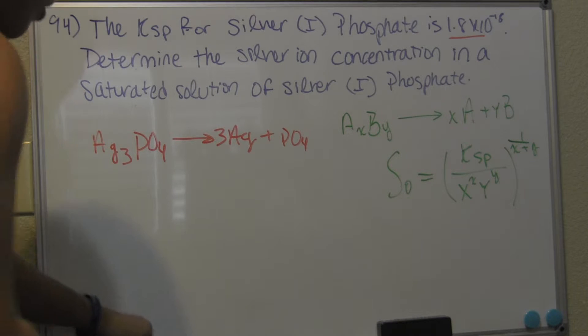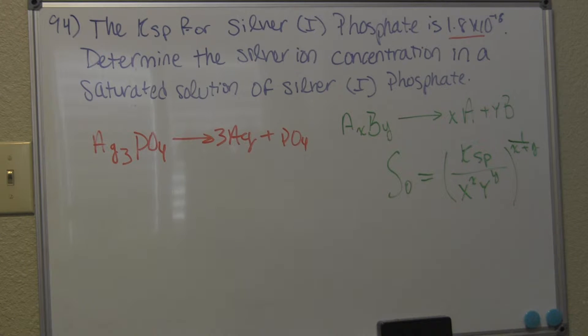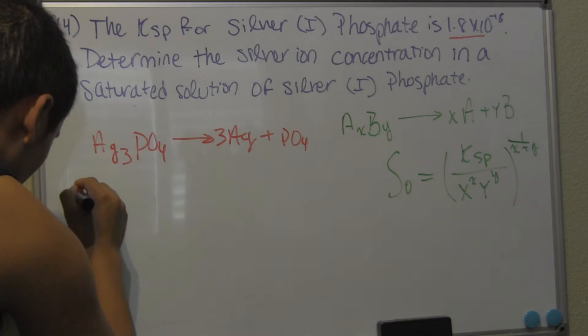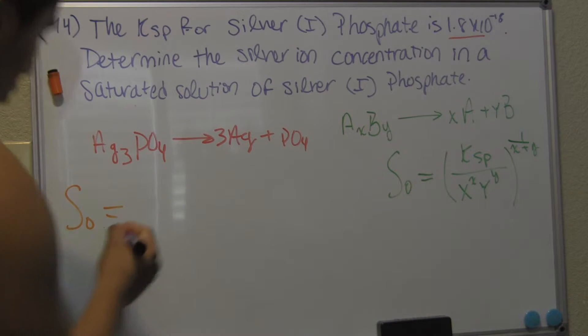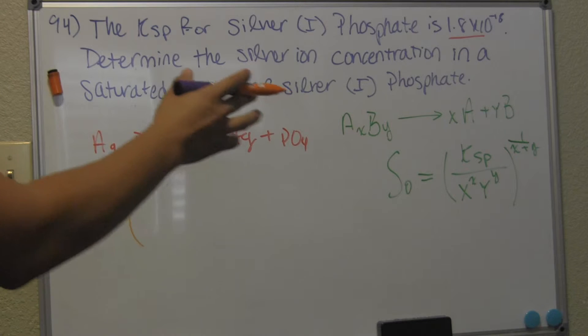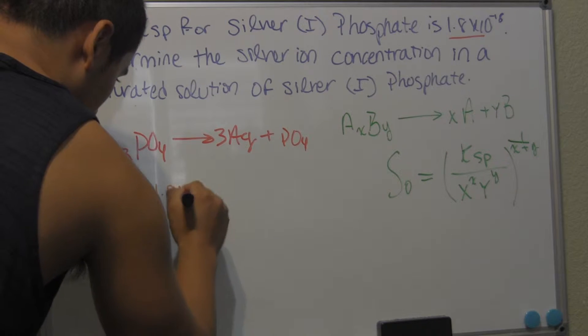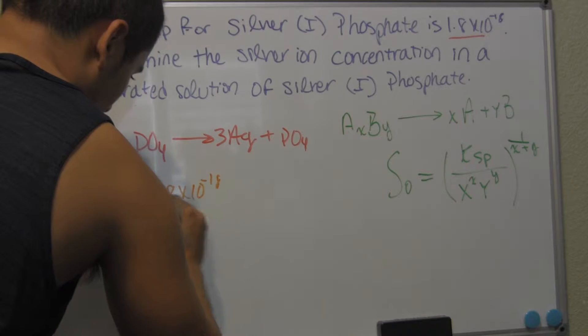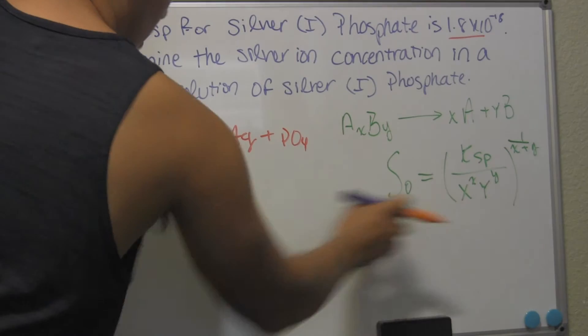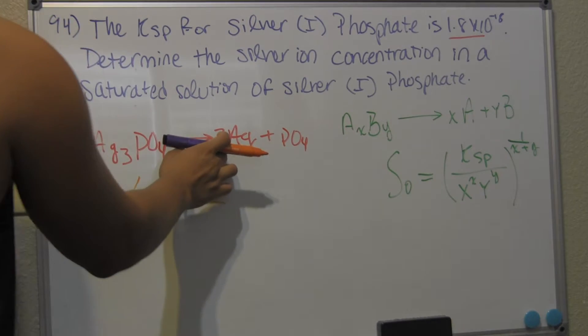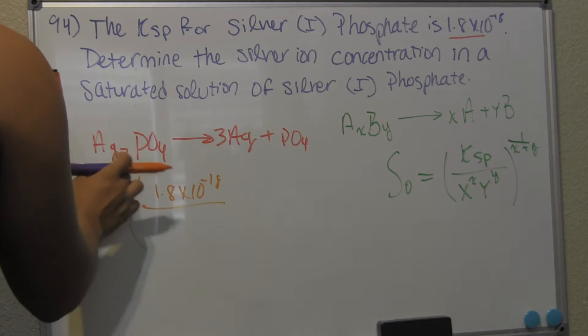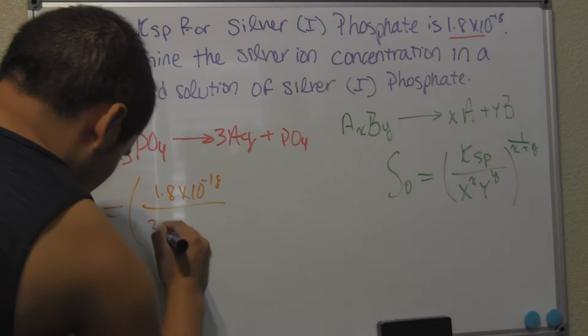So we have a different marker so nobody gets confused. All right. So we have molar solubility, S naught. It's equal to Ksp, which is 1.8 times 10 to the negative 18, over our coefficient right here raised to the subscript over here. So it's going to be 3 raised to the 3.